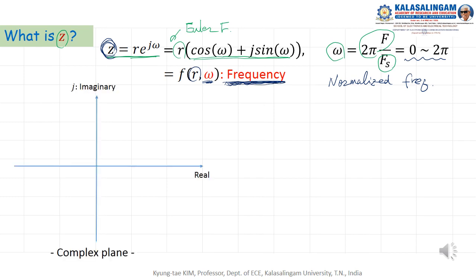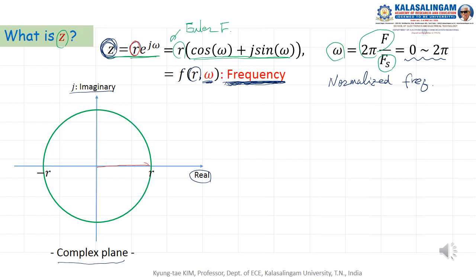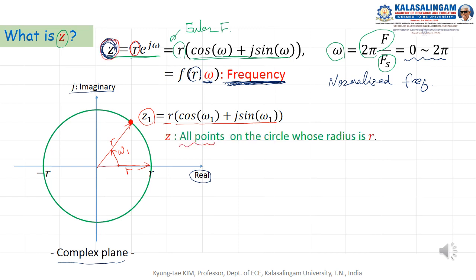Z can be represented in the complex plane, with a real axis and an imaginary axis. R means the radius of a circle. For example, for one of the points on the circle, if R equals some value and angle is omega 1, we can represent that point as Z1 equals R cos omega1 plus J sin omega1. Z means all points on the circle whose radius is equal to R.